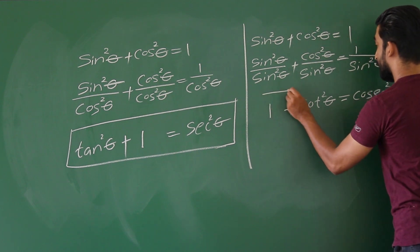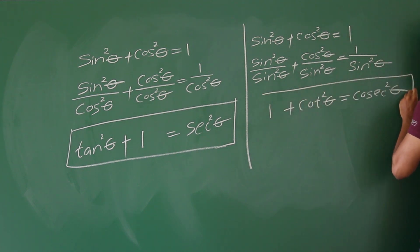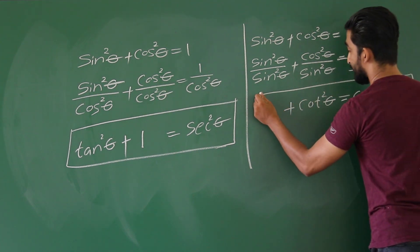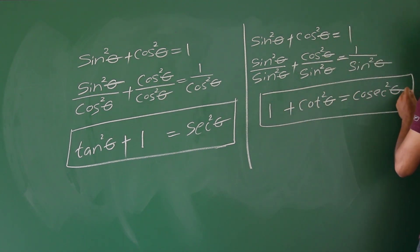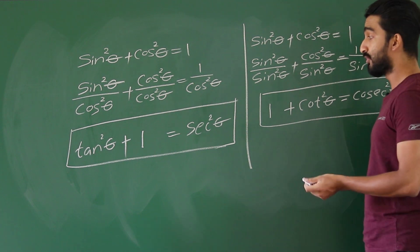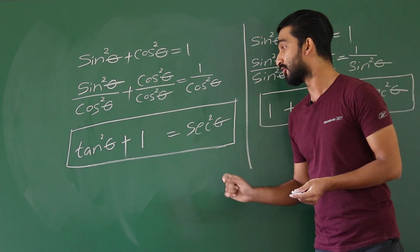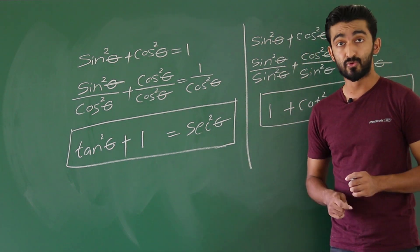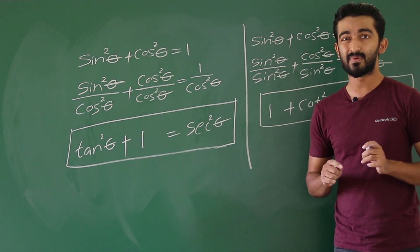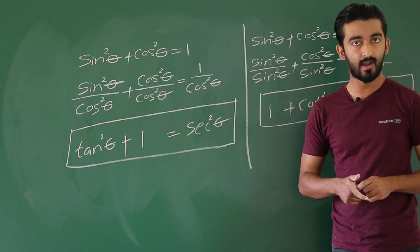So here we go — this is our final basic trigonometric identity: 1 + cot²θ = cosec²θ. Now let's see how to use these basic trigonometric identities to prove a complex trigonometric identity.